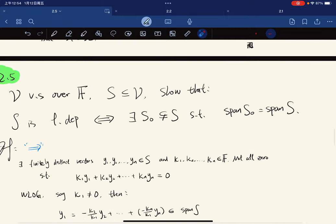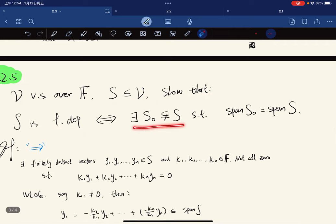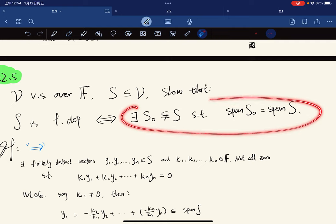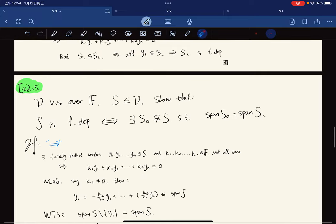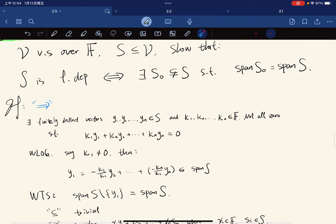V is a vector space over F, S is a subset. We show S is dependent if and only if there exists a proper subset of S such that they span the same. This describes the redundancy. A set as strictly contained, properly contained.